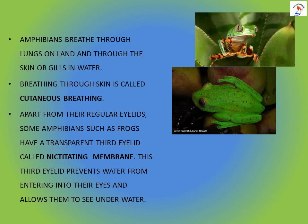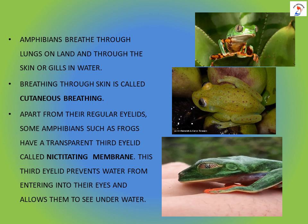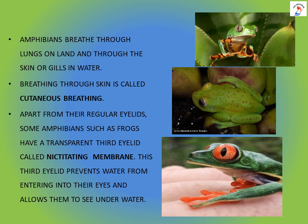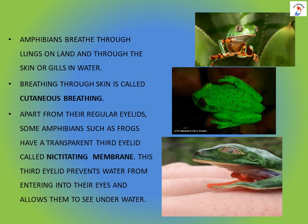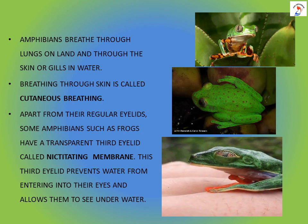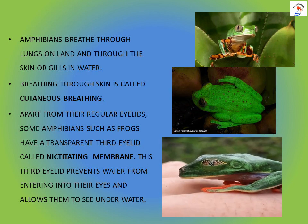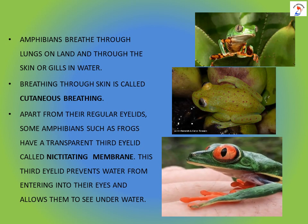There is a special feature in amphibians. Apart from their regular eyelids, some amphibians such as frogs have a transparent third eyelid called the nictitating membrane. It is a whitish or translucent membrane that forms an inner eyelid. This third eyelid prevents water from entering their eyes, allows them to see underwater, protects the eye from dust, and keeps it moist.